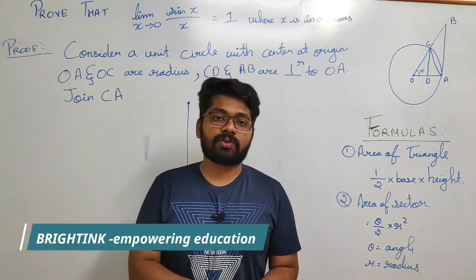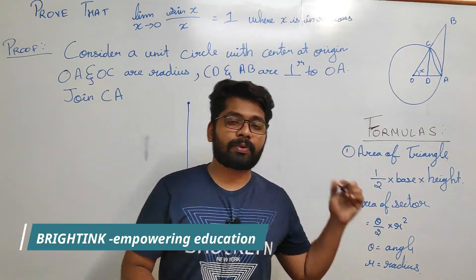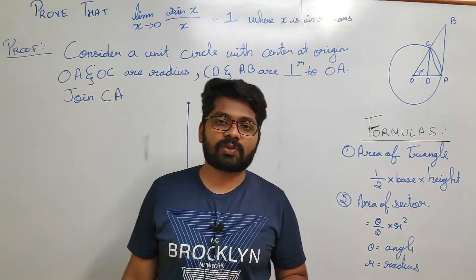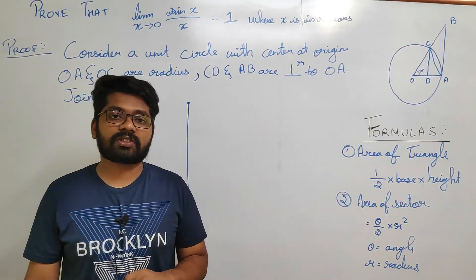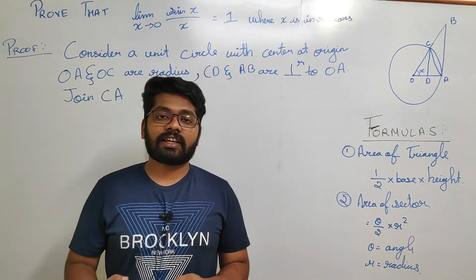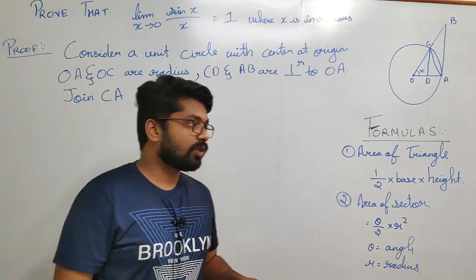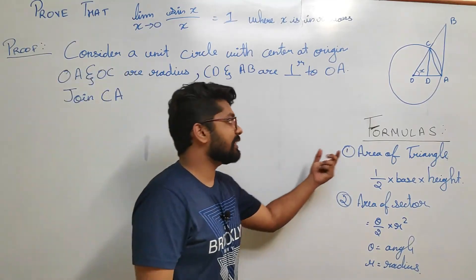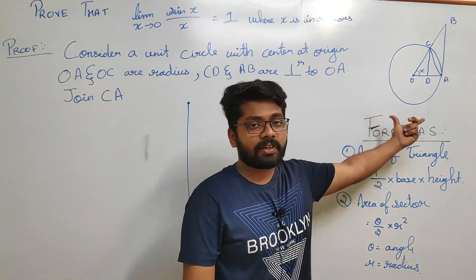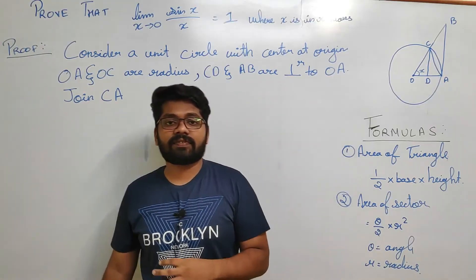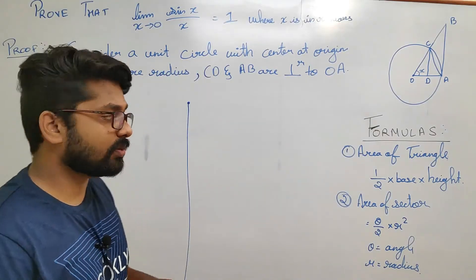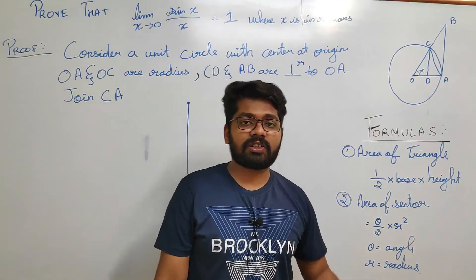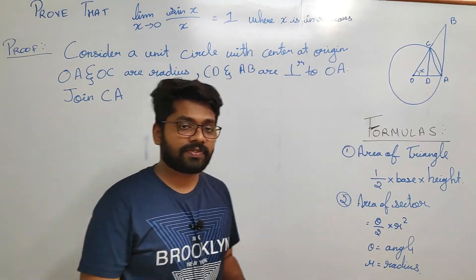We are going to study the proof that sin theta over theta equals 1, or equivalently, the limit as x tending to 0 of sin x over x is 1. In this whole procedure, the diagram is very important — if you understand it clearly, it becomes very easy to solve the problem. So let's see how this diagram comes first.